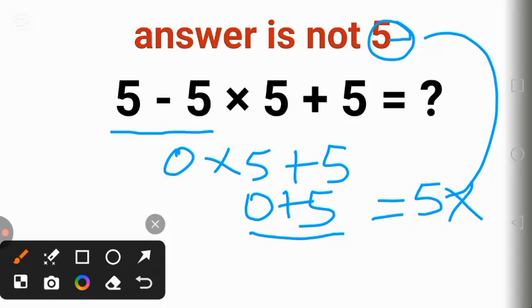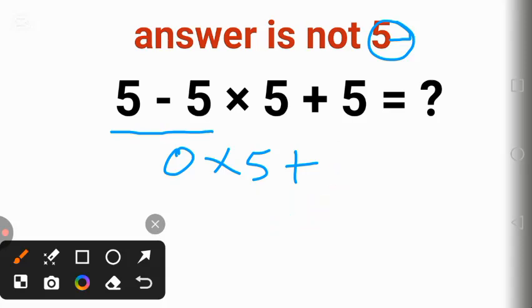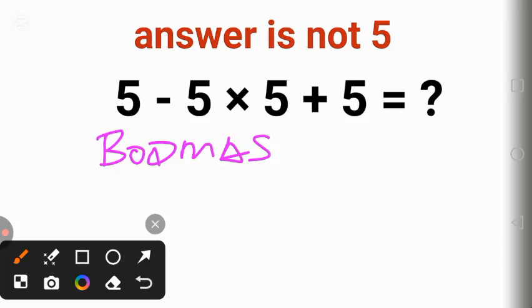To solve this question correctly, we need to follow the order of operation called BODMAS or PEMDAS. Using BODMAS, the first sign according to the letters here is multiplication, so we multiply and we have 5 times 5 gives us 25, 5 minus 25 plus 5.